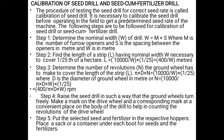Step 1: Determine the nominal width, indicated by W. W equals M multiplied by S, where M is the number of furrow openers and S is the spacing between furrow openers in meters, and W is in meters also. Step 2: Find the length of strip L. Having nominal width W, it is necessary to cover 1/25th of a hectare. L equals 400 divided by W, in meters.